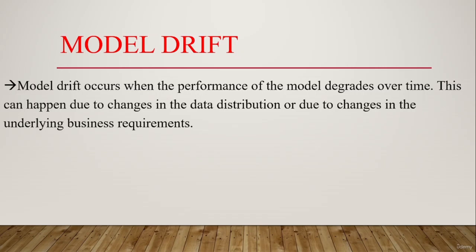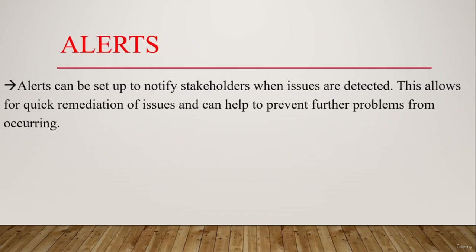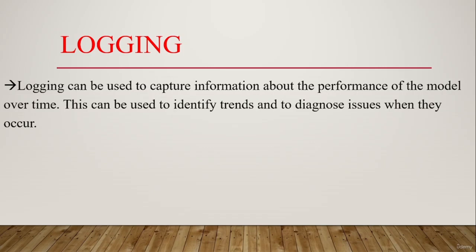In summary, model drift occurs when the performance of the model degrades over time due to changes in data distribution or changes in underlying business requirements. Next, anomaly detection involves monitoring the input and output of a machine learning model for unexpected behavior, helping to detect issues such as incorrect input data or unexpected output. Alerts can be set up to notify stakeholders when issues are detected, allowing for quick remediation and preventing further problems. Logging can be used to capture information about the performance of the model over time, helping to identify trends and diagnose issues when they occur.